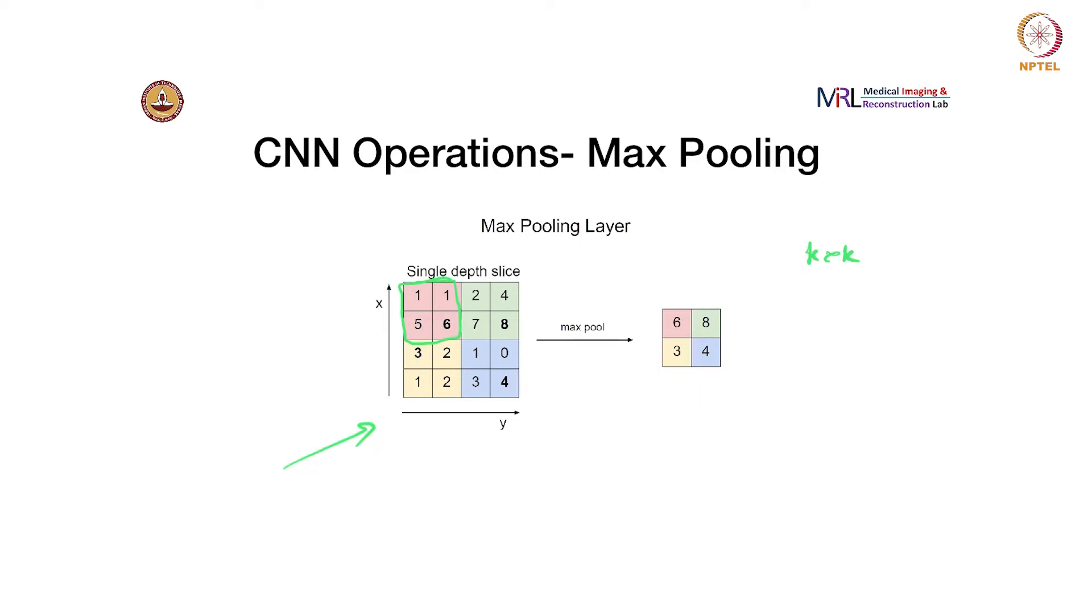As you see going from left to right, in this region I have highlighted, the maximum value is 6, and that goes to the output. Here you have another region with 8 as the output, in this region you have 3, and in another region you have 4 as the output because they correspond to the maximum inside that 2 cross 2 region. You usually do this as a k cross k max pooling.